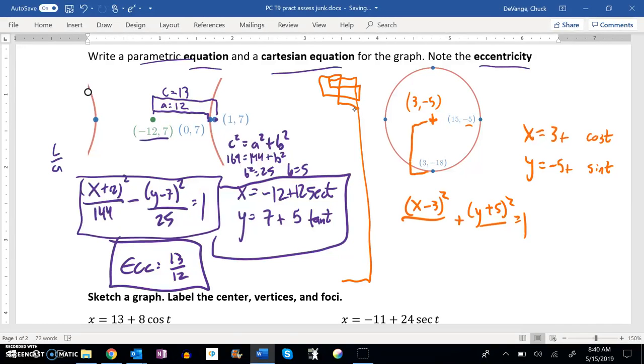This distance right here, this would be the distance from negative 5 down to 18, and that's 13. So this distance is 13, and that's my a value, because it's the longer one. And this distance from 3 to 15, that's a 12.